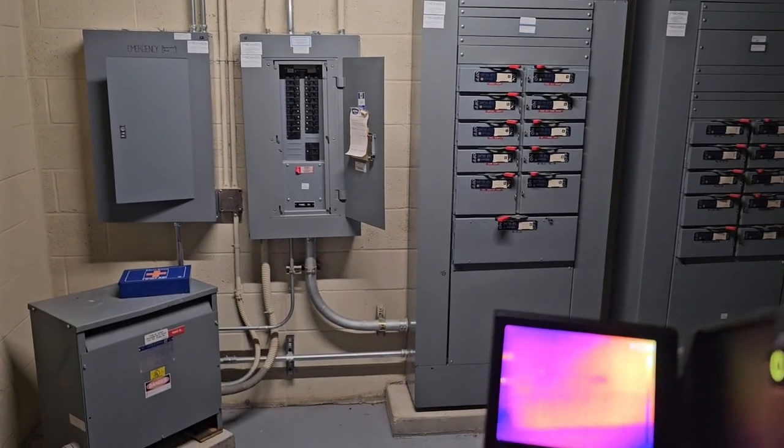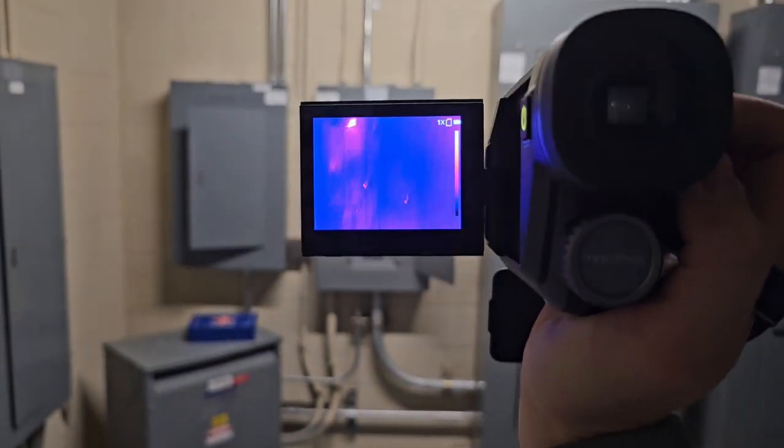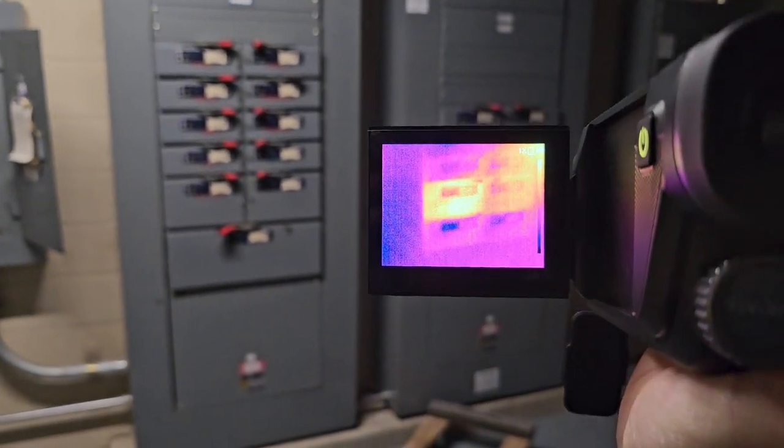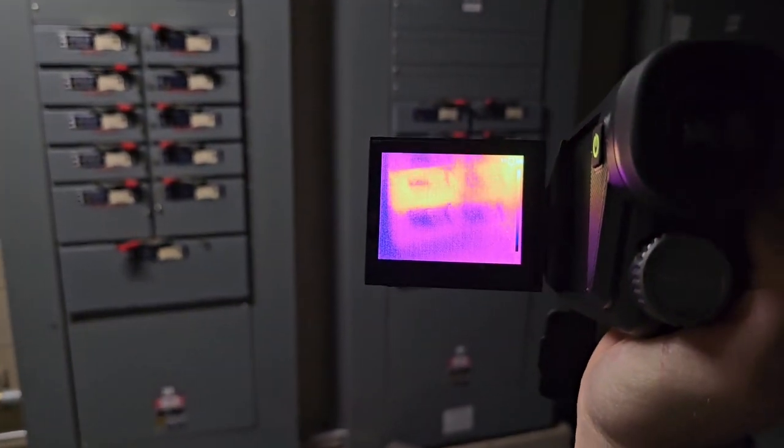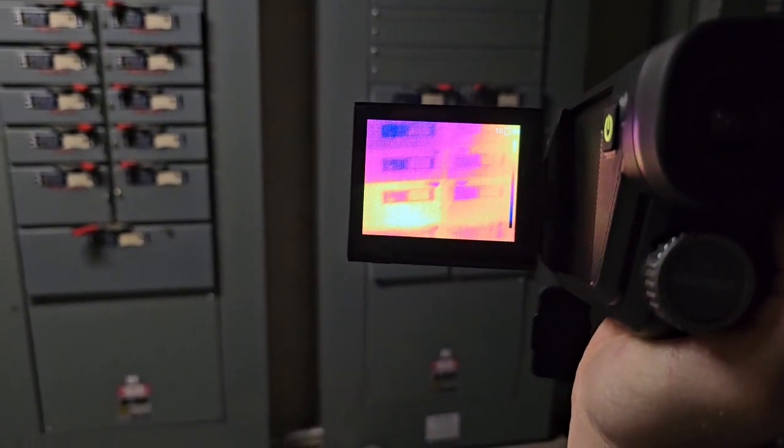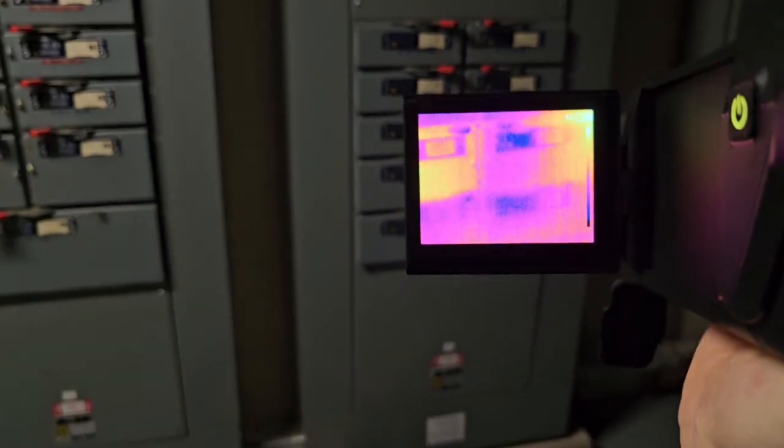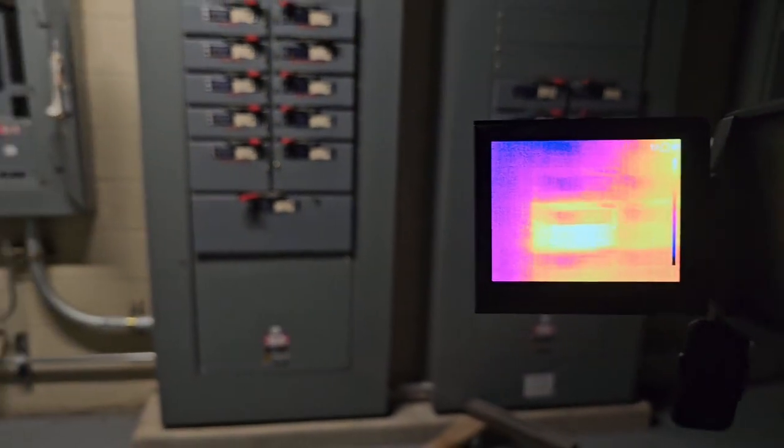Another thing you can use these thermal cameras for is going to be for inspections on circuit breakers and looking for hot spots and things like this. So we can see over here, we've got a hot spot on this one which is for some fans or something like that. So it might be something to go in and tighten up or check up.